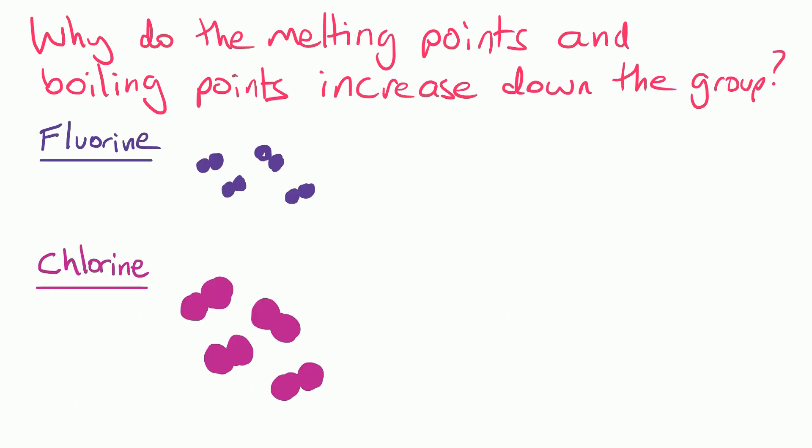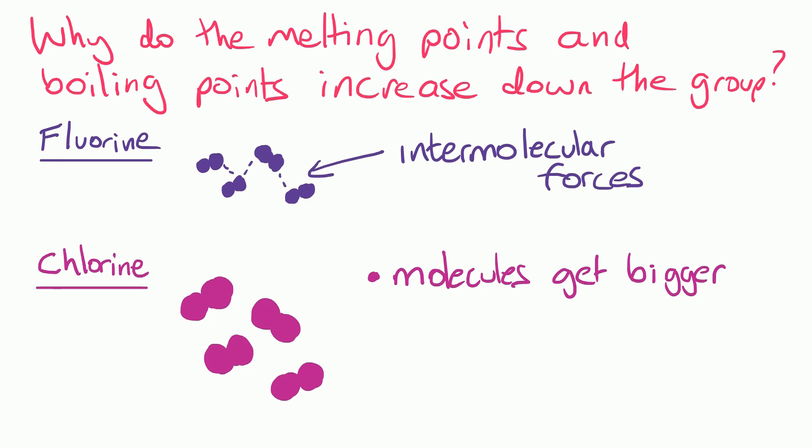So we can see first of all that the halogens go round in pairs. They are what we call diatomic molecules. Two atoms forming a molecule. And the really obvious thing as we go down the group from fluorine to chlorine is that the molecules are getting bigger. Now we also need to consider the forces between the molecules and we call those intermolecular forces. Inter means between. So between the molecule forces. And as we go down the group these forces get stronger. We get stronger intermolecular forces.